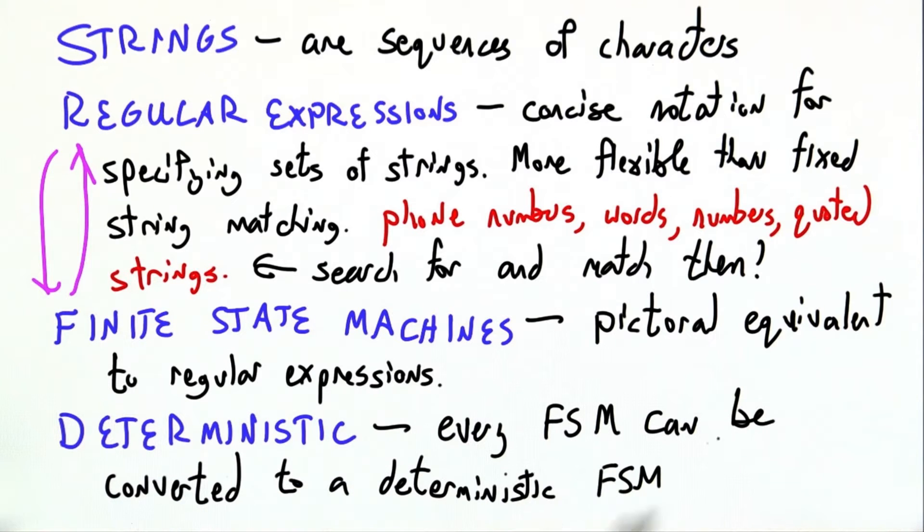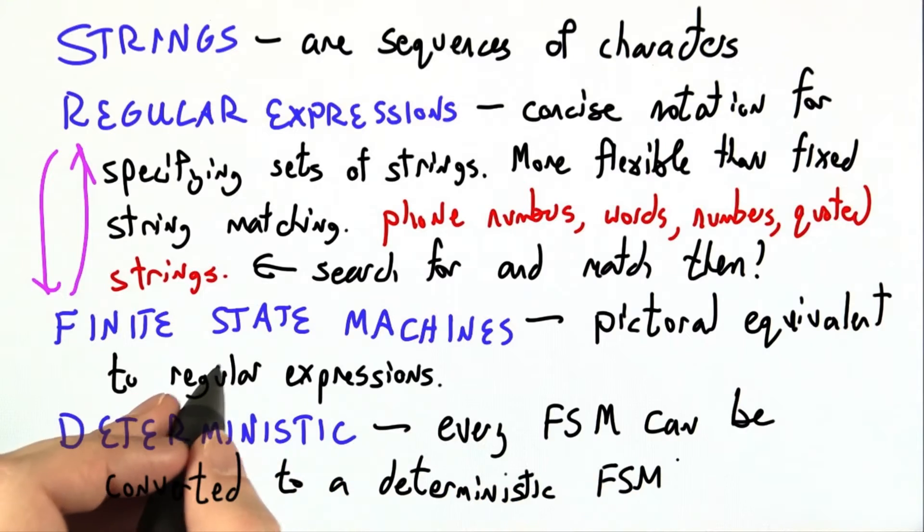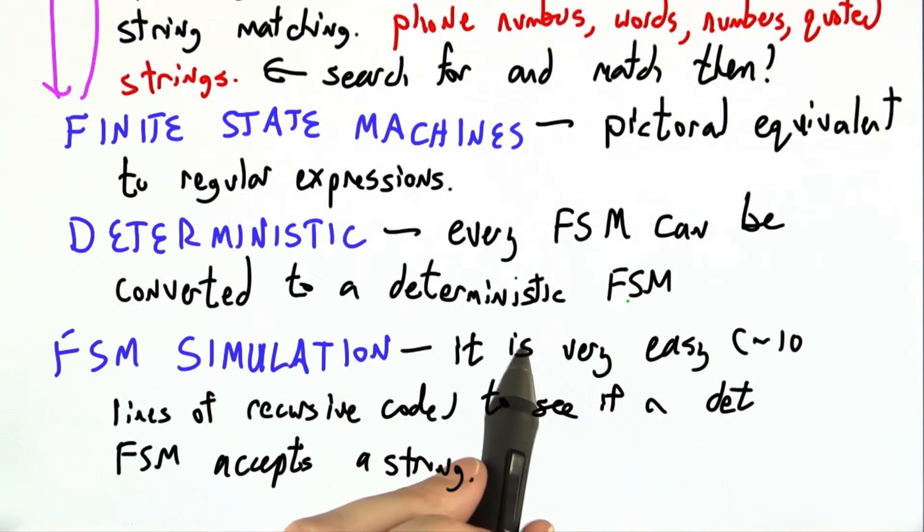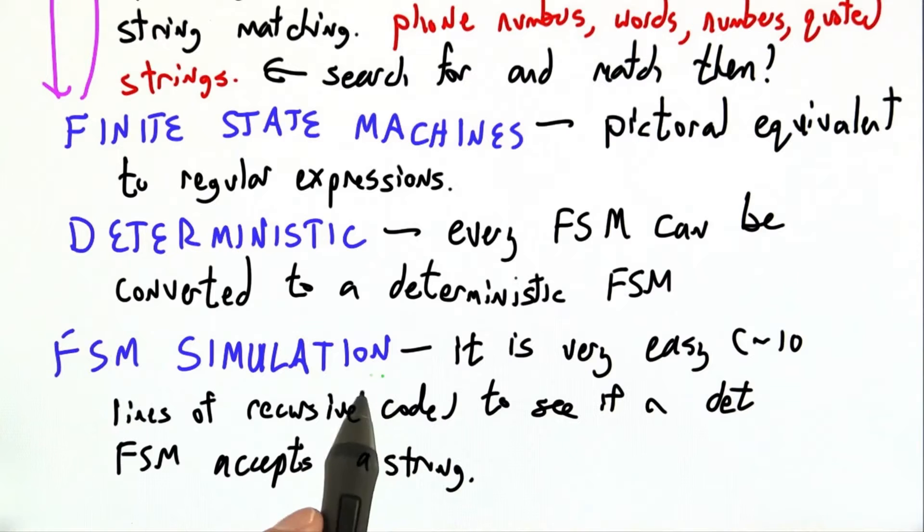And then every finite state machine can be converted to a deterministic finite state machine. No epsilons, no ambiguity. Once we have a deterministic finite state machine, we can simulate it. And it turns out it's very easy, about ten lines of recursive code, to see if a deterministic finite state machine accepts a string.